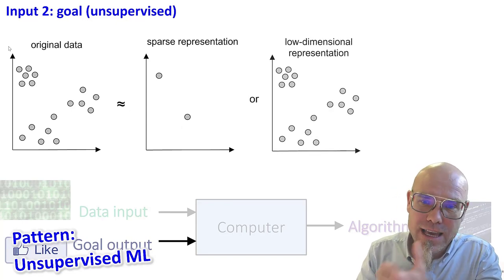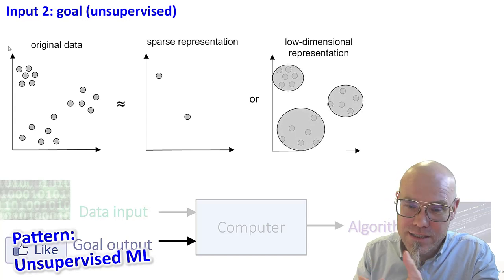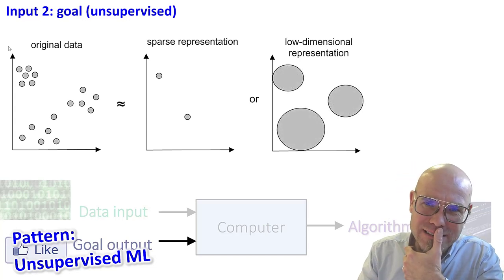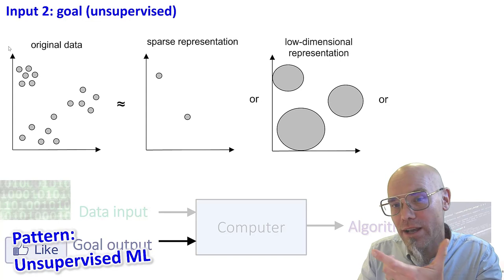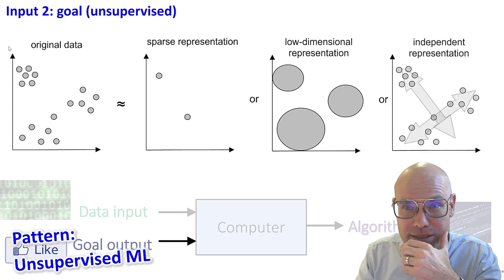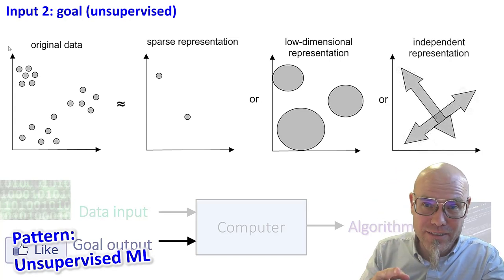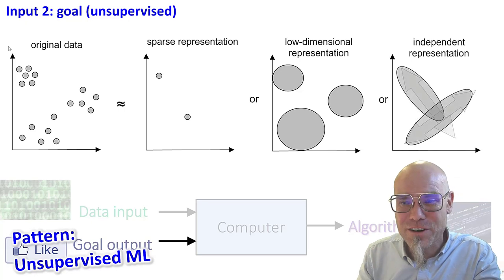I could also say, you know, give me a low dimensional representation. And that's okay. Now actually, you know, it comes down to like three big dots, or I can say, give me an independent representation. Then it looks for the orthogonal vectors. You heard about that.